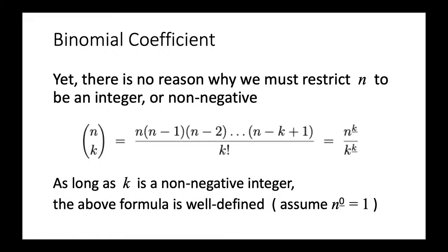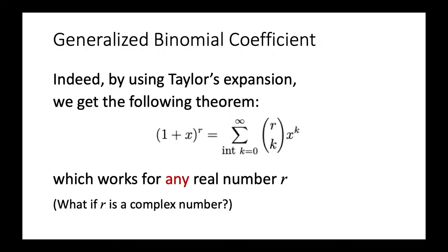If we make this change, something nice will happen. We can have something called the generalized binomial coefficients, where we are not restricting the top to be a positive integer. Using Taylor's expansion, we can try to expand 1 plus x to the power of r, and we find it will be equal to an infinite series — the summation over all k from 0 to infinity of r choose k times x to the power k — and this formula works for any real number r.